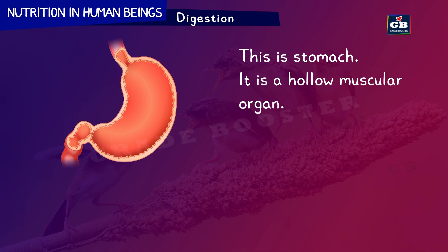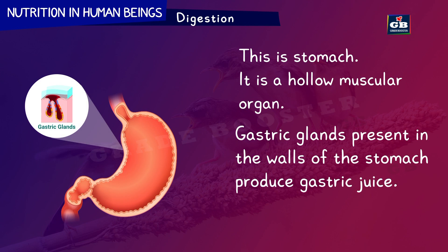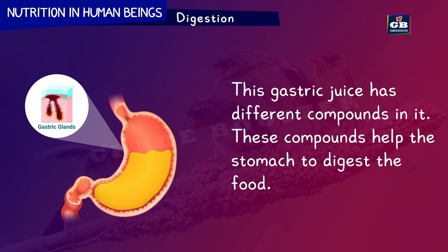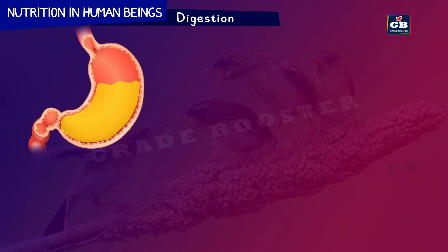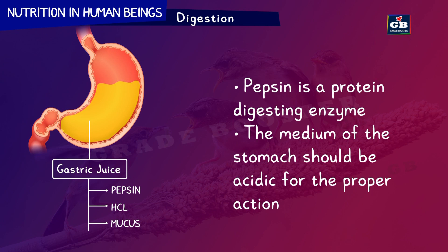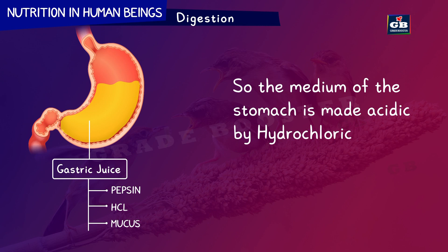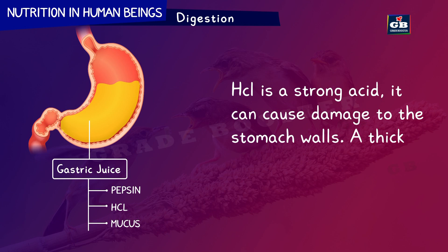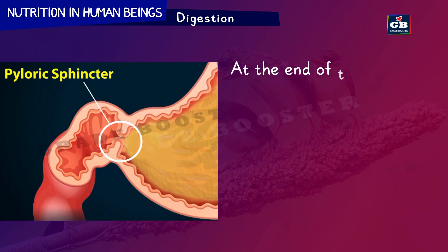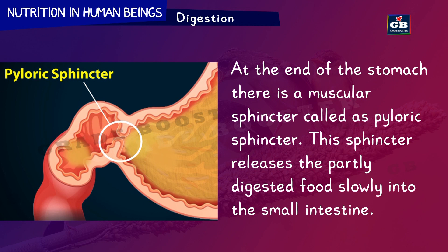The stomach is a hollow muscular organ. Gastric glands present in the walls of the stomach produce gastric juice, which contains pepsin, hydrochloric acid and mucus. Pepsin is the protein-digesting enzyme, and the stomach medium must be acidic for its proper action — hydrochloric acid provides this acidity. A thick layer of mucus protects the stomach walls from the action of HCl. At the end of the stomach, a muscular sphincter called the pyloric sphincter releases partly digested food slowly into the small intestine.